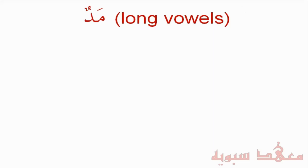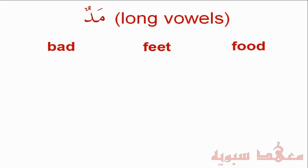Now in English, we have the following words. The word 'bad' — notice the elongation of the A sound; we don't say 'bad', we say 'baad'. Similarly, we have the word 'feet' — we don't say 'fit', we say 'feet'; there's an elongation of the E sound. And also the word 'food' — we don't say 'fud', we say 'foood', so there's the elongation of the U sound.